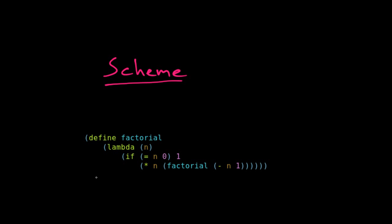Let's talk about Scheme. Scheme is a member of the Lisp family of languages, and this is a classic example here of a recursive definition of factorial.